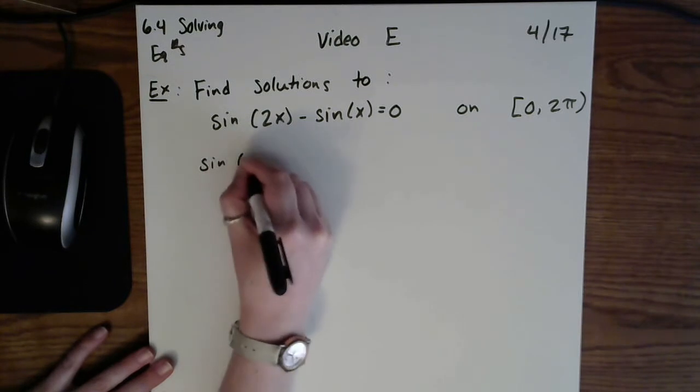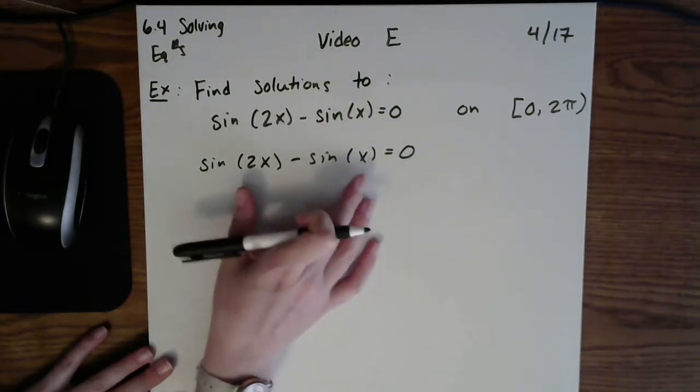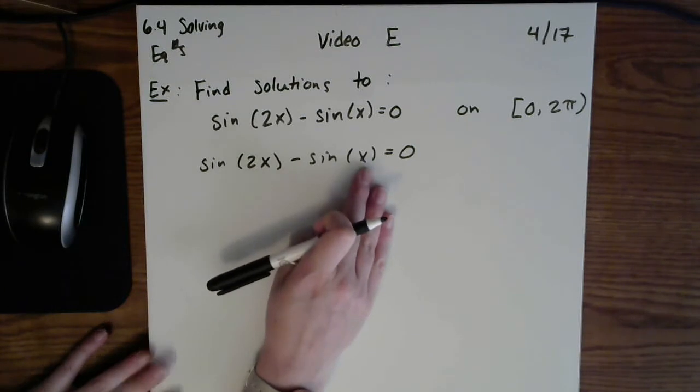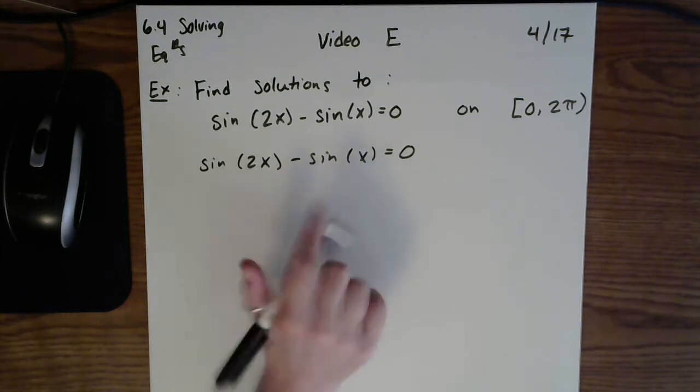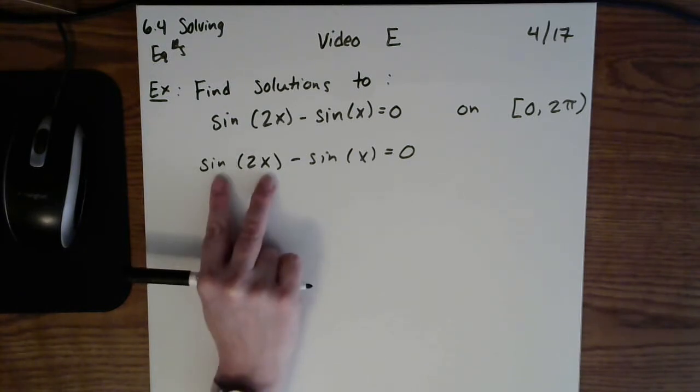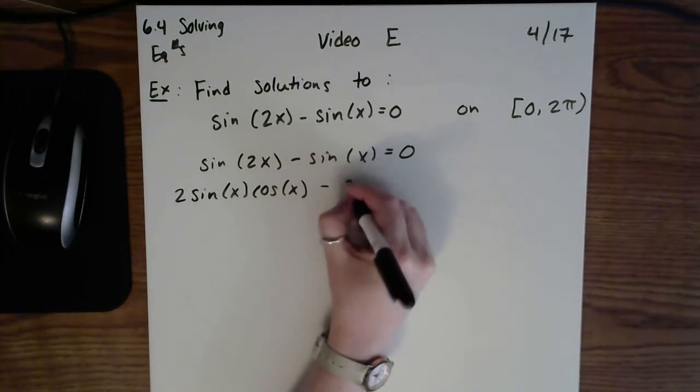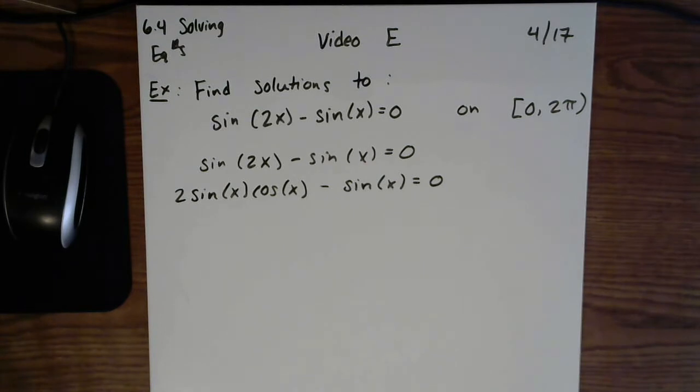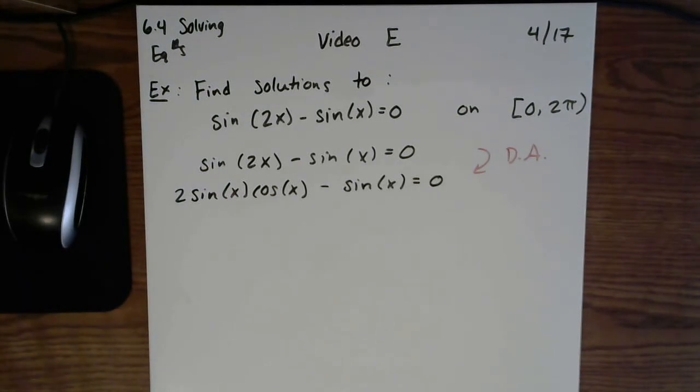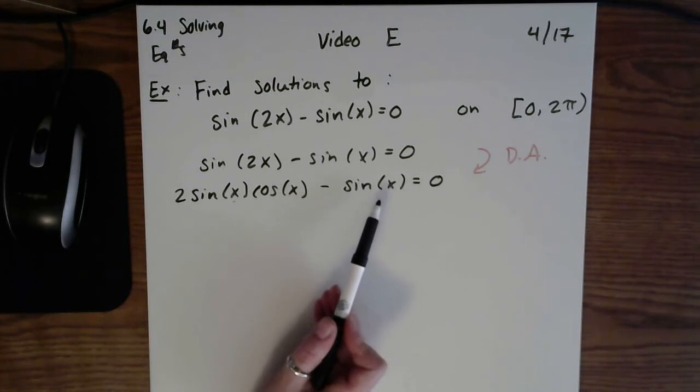The first thing that I am noticing with this example is that right from the beginning these are not like terms because they don't have identical inputs. Here is a double angle, this one has a single angle. So my goal is to try to make it so that they both have single angle inputs. I'm going to convert this double angle into 2sin(x)cos(x). What you might have noticed here is that to get from this step to this step I used the double angle formula exactly as it reads on your cheat sheet for sin(2x). Now notice they all have single angle inputs. That's really helpful.